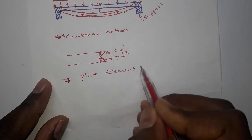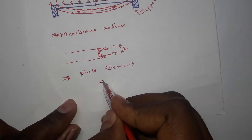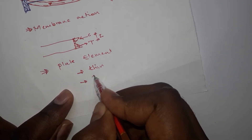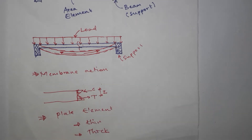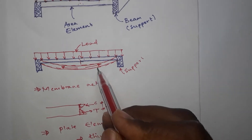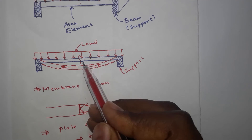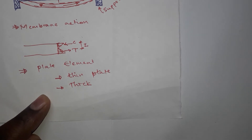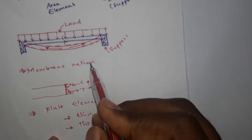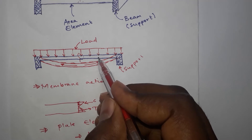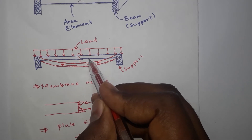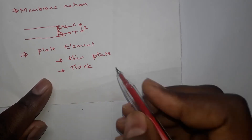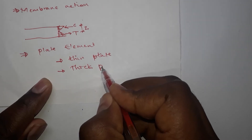Now plate elements have two types: thin and thick. If the shear deformation is neglected in this plate element, we call it a thin plate element. But if the shear deformation is required to be considered when analyzing this plate element, we will model it in SAP or whatever package as a thick plate element.